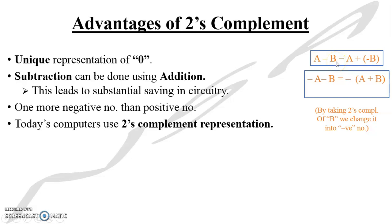Similarly, if our operation is minus A minus B, we can take the 2's complement of both numbers. When we take the 2's complement, we automatically change them into negative numbers. After taking the 2's complement of both and adding them, it will actually be the same operation. By taking the 2's complement, we can change a positive number into a negative and vice versa.